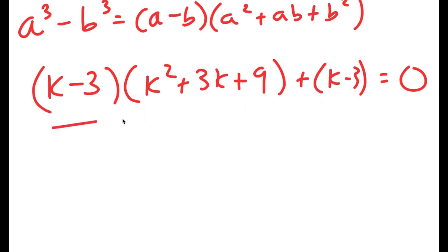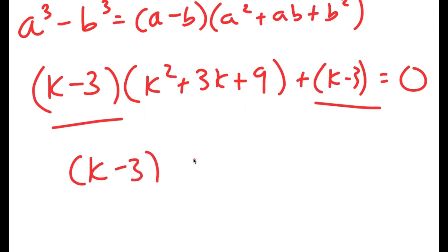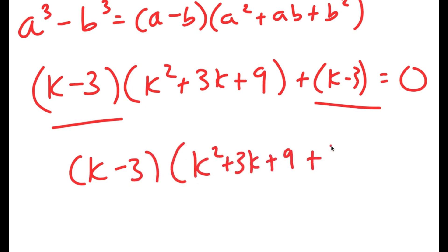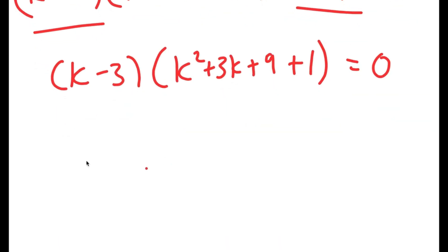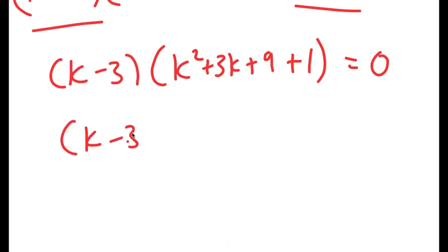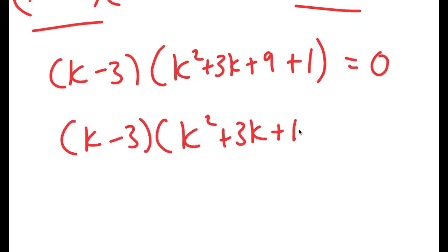Because both of these terms have k minus 3 in them, I can factor out k minus 3. So I get k minus 3 times k squared plus 3k plus 9 plus 1, because k minus 3 divided by k minus 3 is 1, is equal to 0. So this becomes k minus 3 times k squared plus 3k plus 10 is equal to 0.